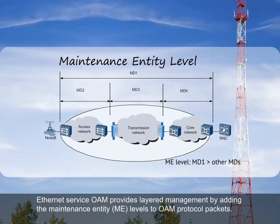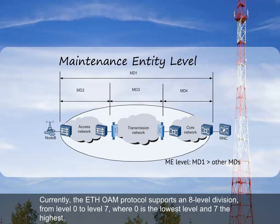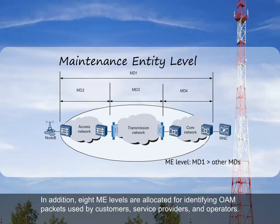Ethernet service OAM provides layered management by adding maintenance entity, ME, levels to OAM protocol packets. Currently, the ETH OAM protocol supports an 8-level division, from level 0 to level 7, where 0 is the lowest and 7 is the highest. In addition, 8 ME levels are allocated for identifying OAM packets used by customers, service providers, and operators.